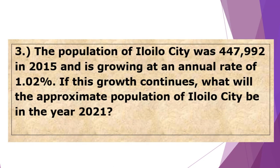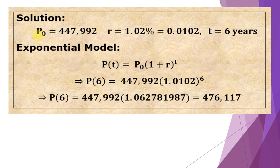Number 3. The population of Iloilo City was 447,992 in 2015 and is growing at an annual rate of 1.02%. If this growth continues, what will be the approximate population of Iloilo City in the year 2021? Solution: we have P₀ = 447,992, and the rate is 1.02% converted to decimal, it's 0.0102.